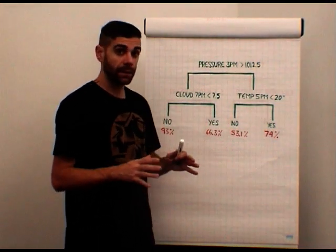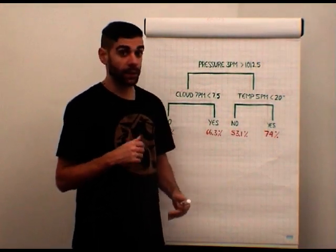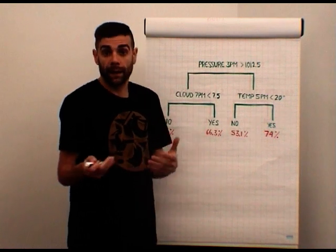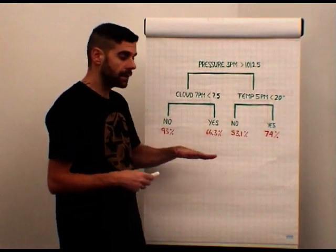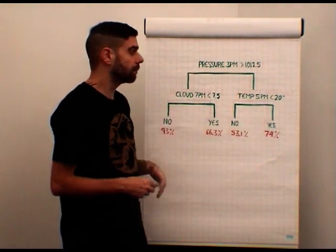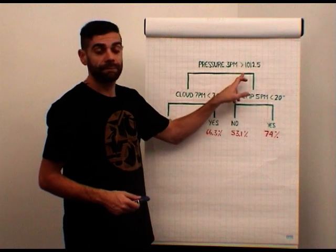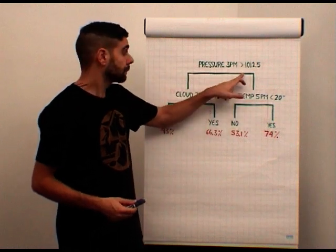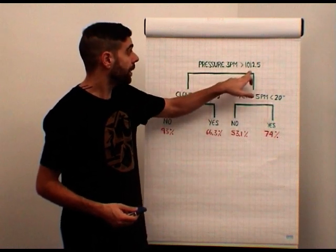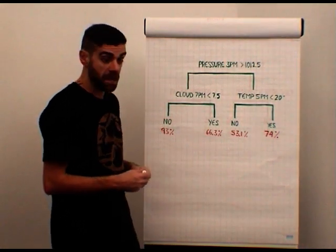So we have a question: Will it be raining tomorrow? We want an answer, yes or no. To find this, let's follow. Let's imagine today at 3 p.m. we have a pressure greater than 1012.5 millibar. Yes?